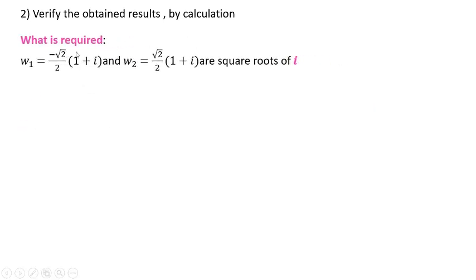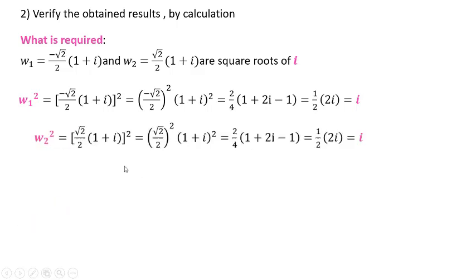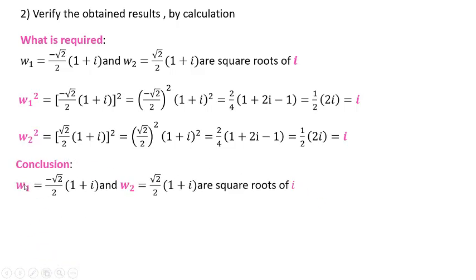Now go to part 2: verify the obtained results by calculation. What is required is to show that w₁ and w₂ are square roots. It is enough to show that w₁² = i. Distribute the square and do calculations to get i. Consequently, w₁ is a square root of i. In a similar way, w₂² = i. Finally, the conclusion: w₁ and w₂ are square roots of i.